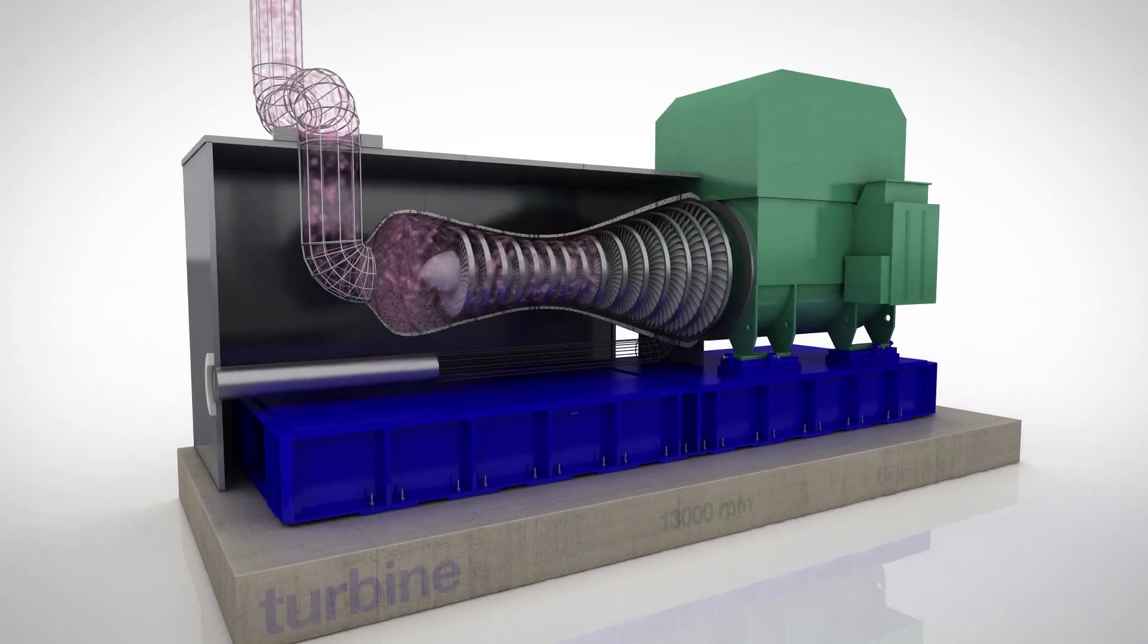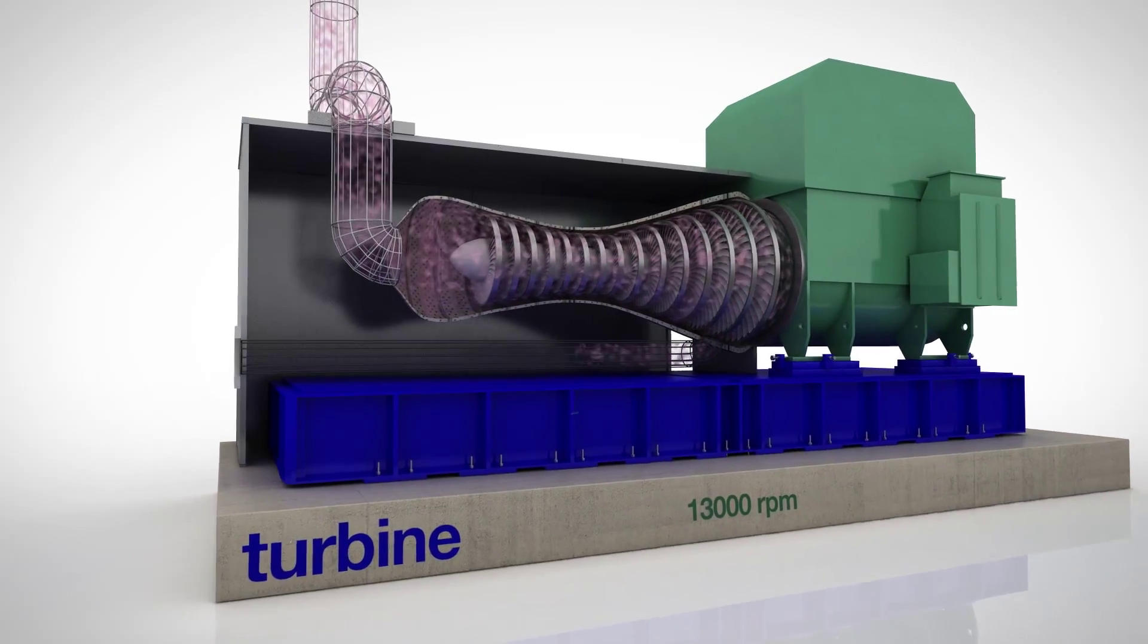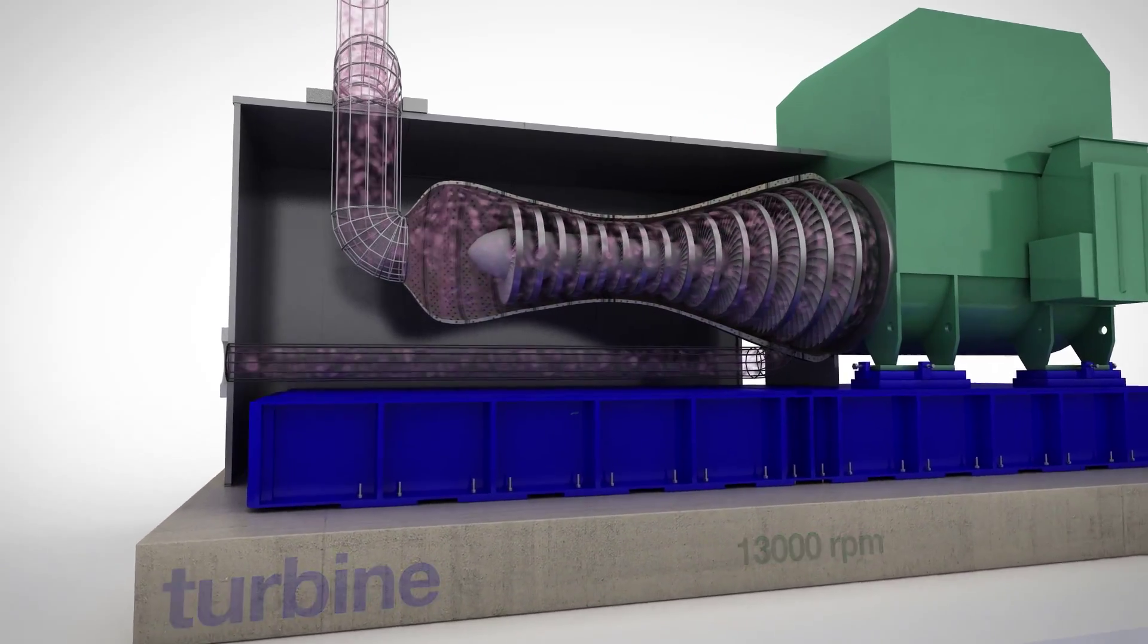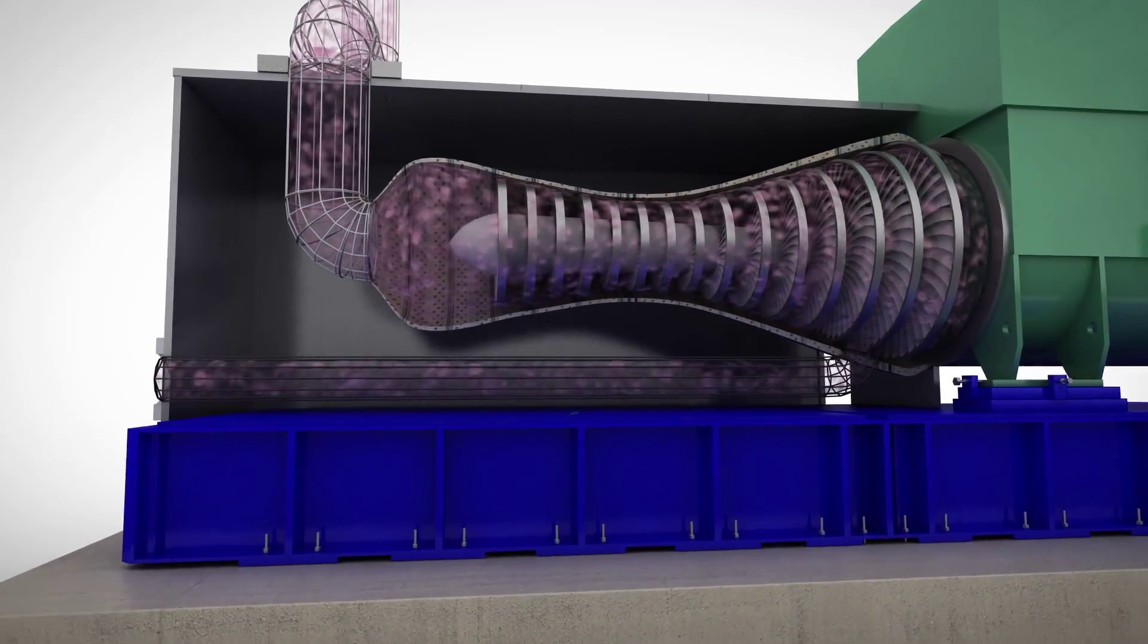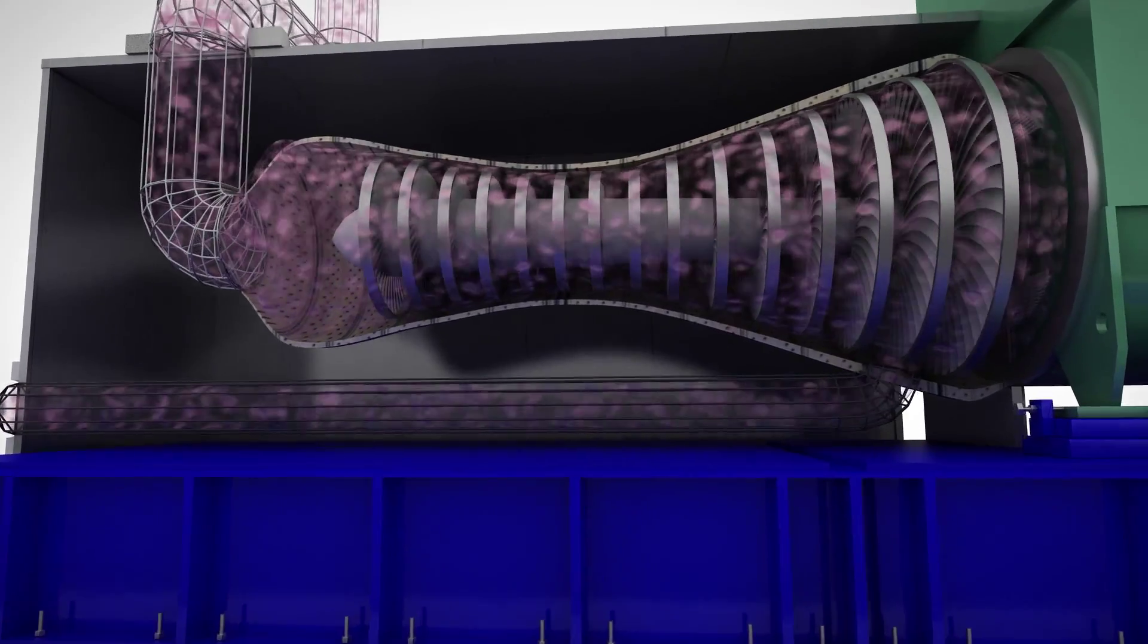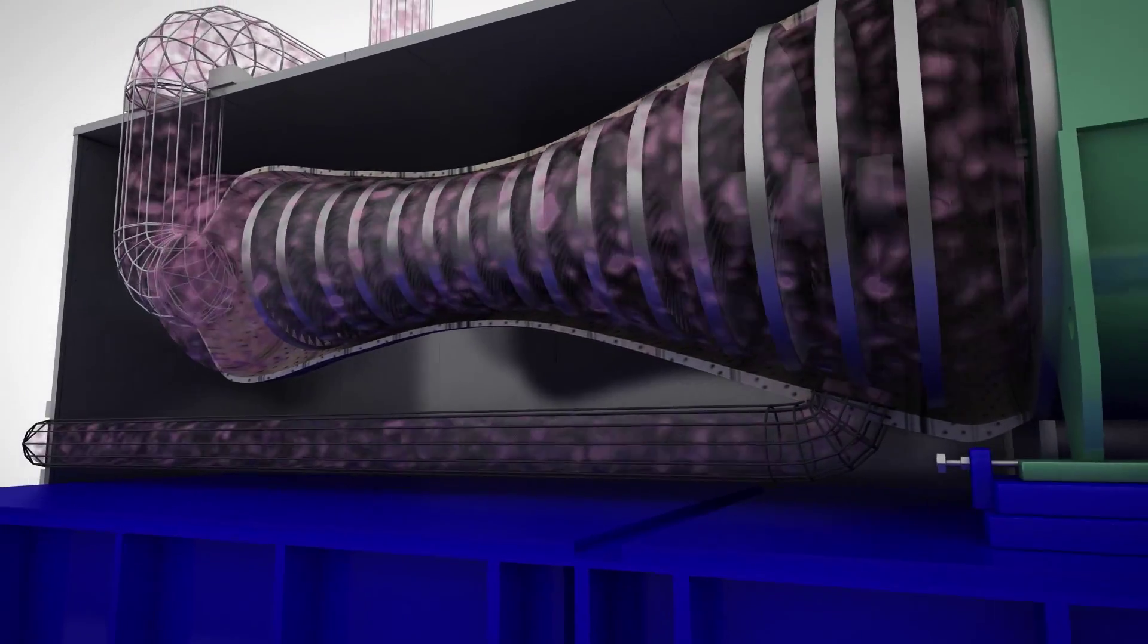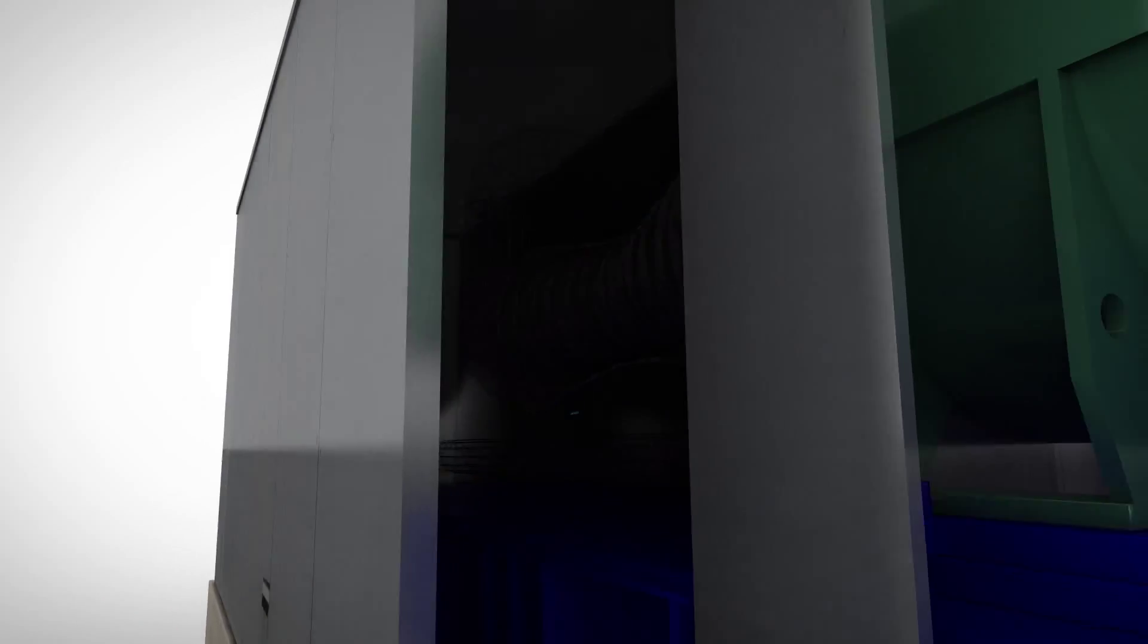Inside the turbine, the high-pressure vapor expands while forcing the turbine to spin at over 13,000 revolutions per minute. This process causes the vapor's pressure to drop and also results in a temperature drop from 120 to 85 degrees Celsius.